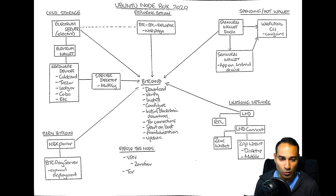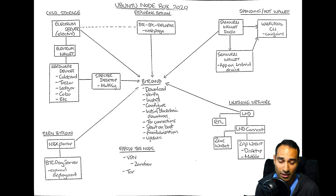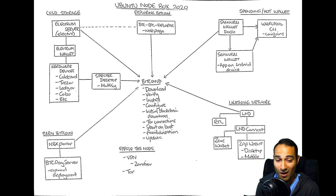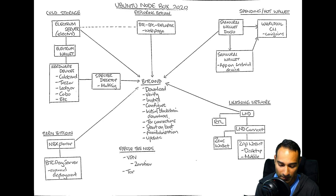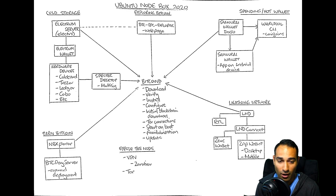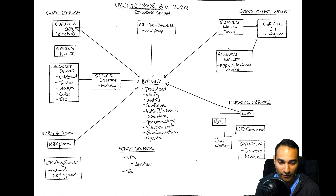That presents a complete plan and overview of all the software this one machine will handle. In terms of advantages of a node box like this: one key advantage is sovereignty — you get to pick and choose exactly what you want to install, when you update it, and if you want to update it. It's more self-sovereign in that respect. Another advantage is that using a general-purpose computer you can get it done cheaply, but also get more grunt — it'll be a bit snappier.